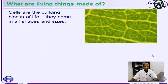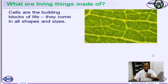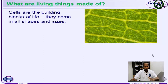What are living things made of? Virtually every living thing is made up of cells. Therefore, we say cells are the building blocks of all living organisms. Cells come in different shapes and in different sizes.